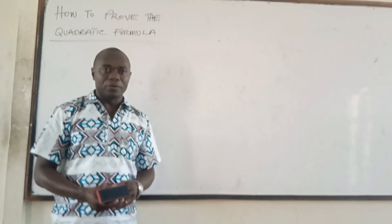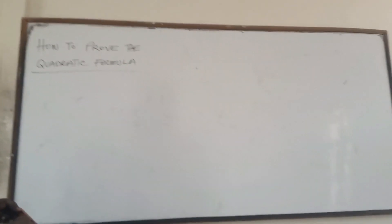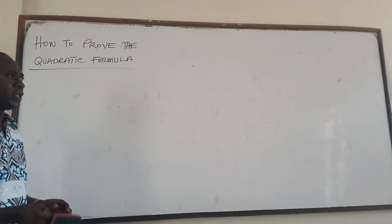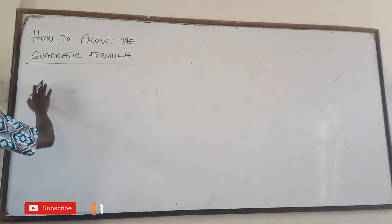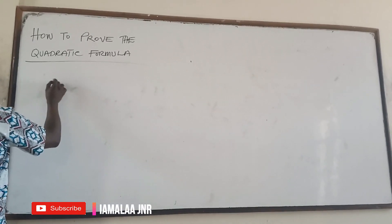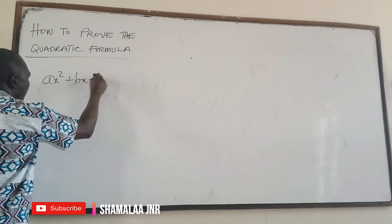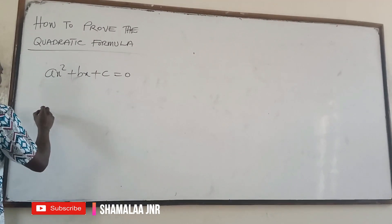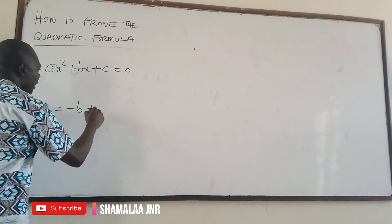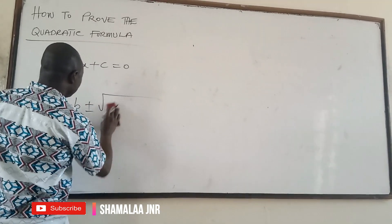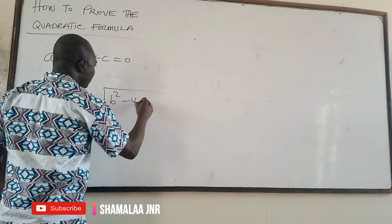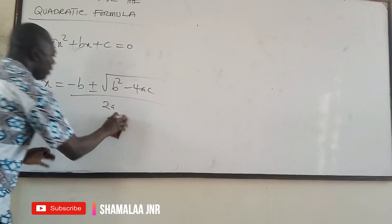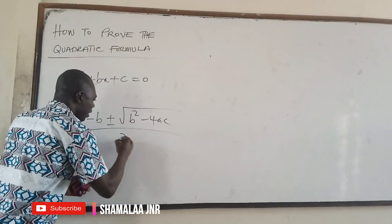Hello viewers, welcome to this video. Today we want to look at how you can improve — or rather derive — the quadratic formula. When you have the quadratic equation ax² + bx + c = 0 and you solve it, you get x is equal to negative b plus or minus square root of b² minus 4ac, all over 2a. This is the general quadratic formula.